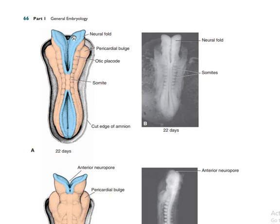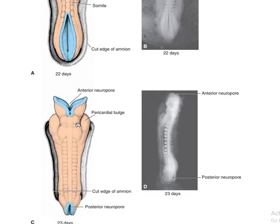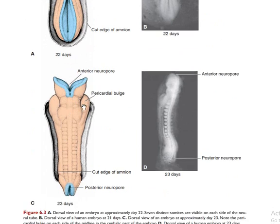You can see the pericardial bulge — the heart is formed mainly from muscle, which is why there is a big cardiac bulge. By day 22 there are greater numbers of somites, and the neural tube is closing at its upper and lower portions. Certain congenital diseases arise when the neural tube does not close — these are called neural tube defects.